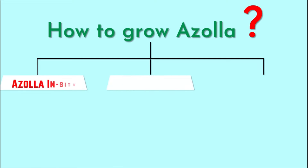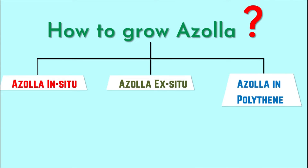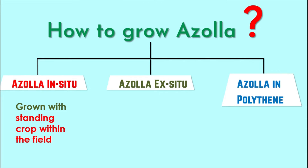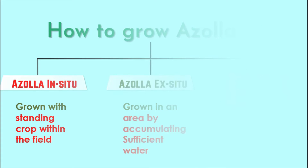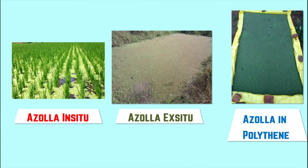There are three methods to cultivate Azolla: Azolla in situ (growth in the standing crop field), Azolla ex situ (growth in a separate area with accumulated water), and Azolla in polythene, which is the most commonly used method today.